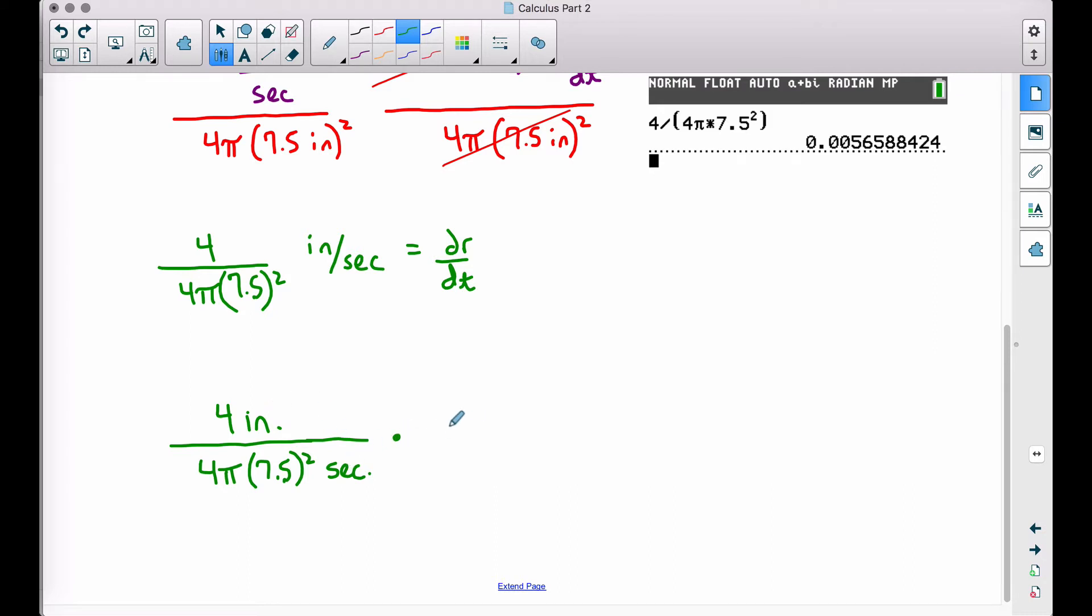So notice I have inches over seconds, and to convert these seconds to minutes, we can multiply by 60 seconds over 1 minute. And what this will do, the dimensional analysis will get rid of the seconds, and now we will be left with inches per minute.